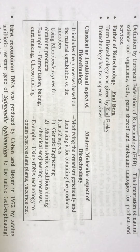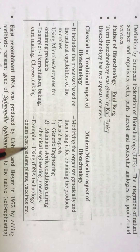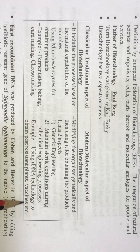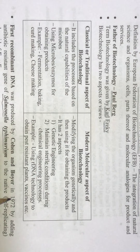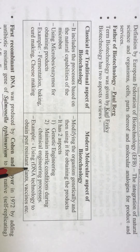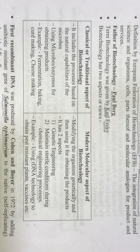Sterile conditions are maintained. An example is using recombinant DNA technology to obtain pest-resistant plants and vaccines. Farmers want their crops not to be destroyed by pests, so scientists are developing pest-resistant varieties using recombinant DNA technology. The whole process will be covered in the next chapter on applications of biotechnology.